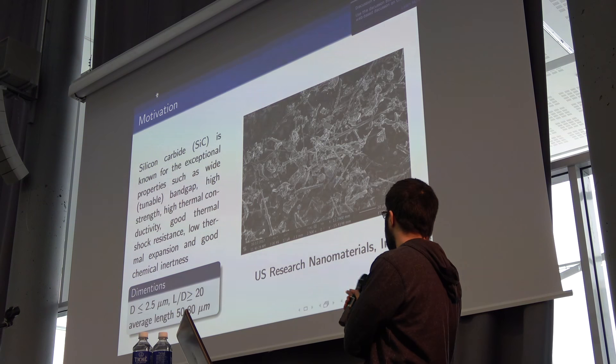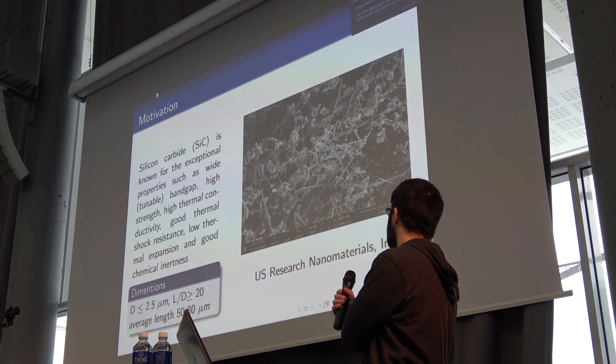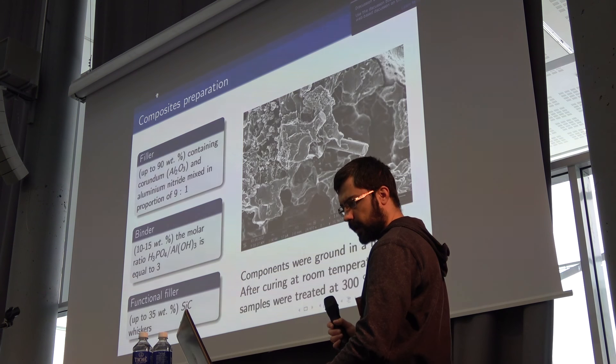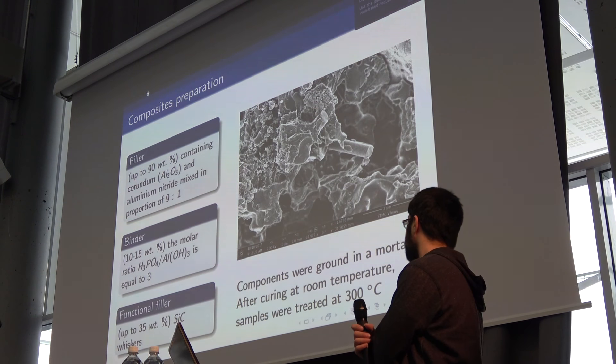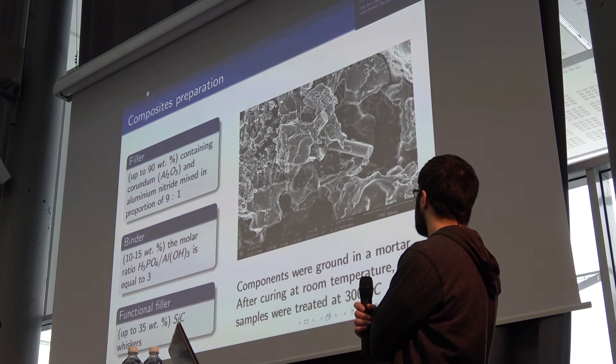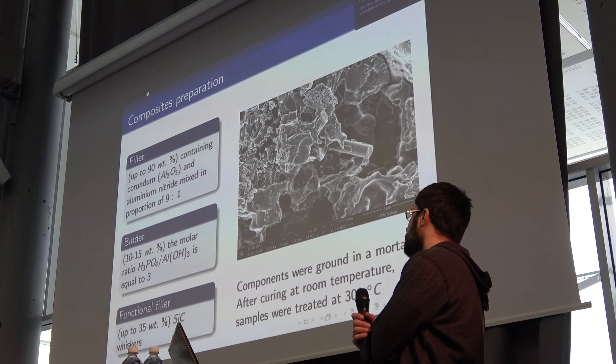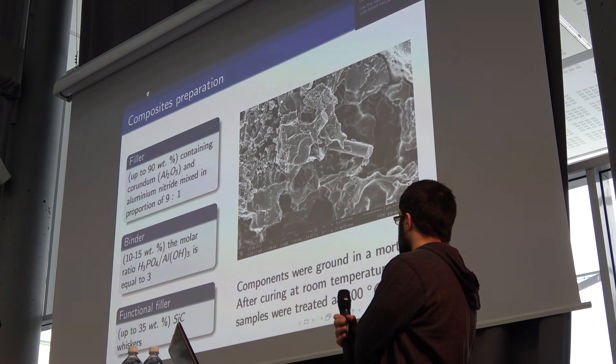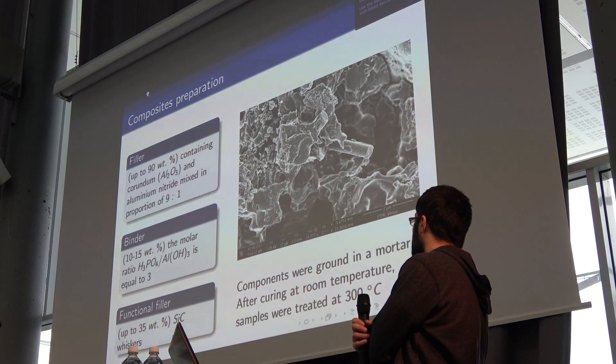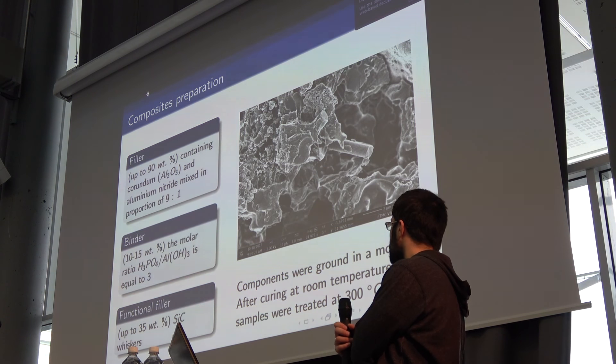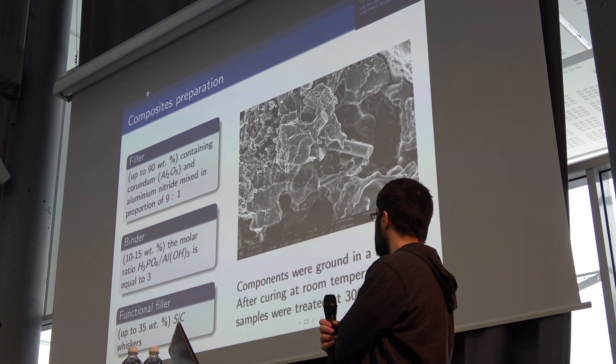We used commercially available materials from US Research Nanomaterials. Here are the dimensions. As a composite matrix, we use aluminum phosphate ceramic, which is quite interesting as a matrix by itself because it can work at temperatures up to 2000 degrees centigrade, but all the preparation procedures occur at low temperature. There are two basic components and one optional for the ceramics: a filler and binder.